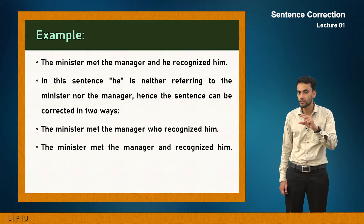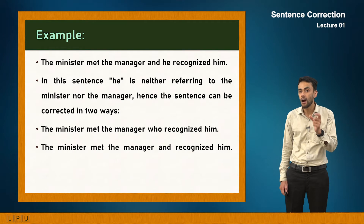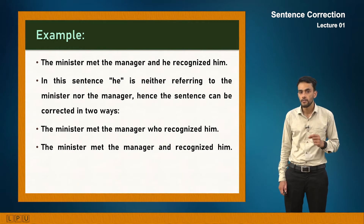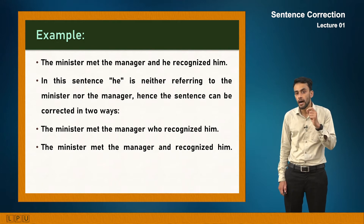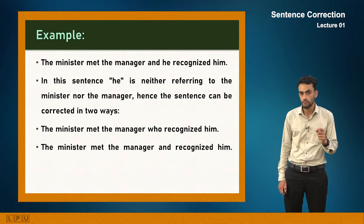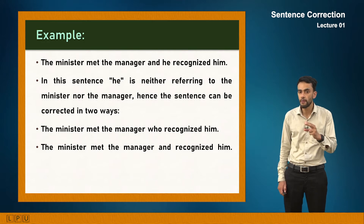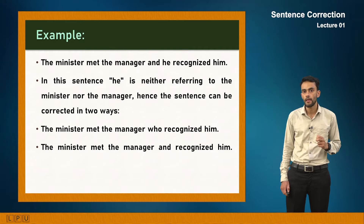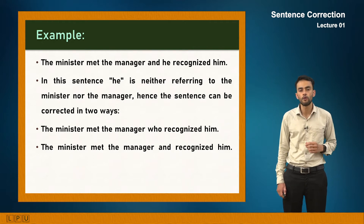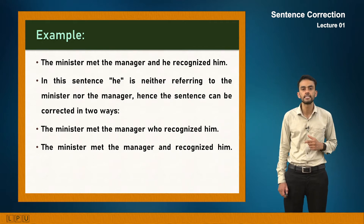The correct sentence is: 'The minister met the manager who recognized him.' Here 'who' refers to the manager because it immediately follows that word. Alternatively, 'The minister met the manager and recognized him' makes clear it was the minister who did both actions — first meeting the manager, then recognizing him. These are the correct ways of stating these sentences.